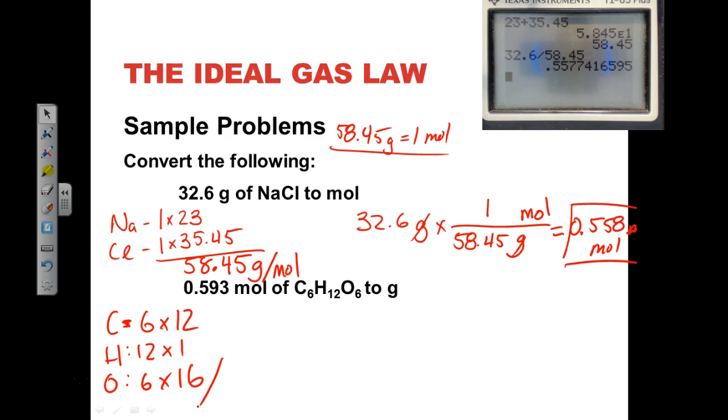So when we take those and we add those up, we get 6 times 12 plus, 12 times 1 is 12, plus 6 times 16, and when we get that, we get 180. And again, the units are the most important part here, grams per mole.